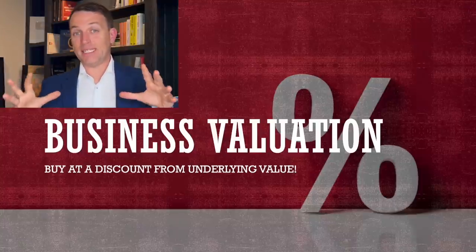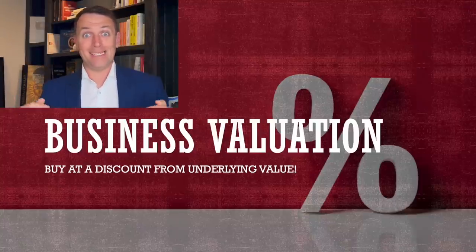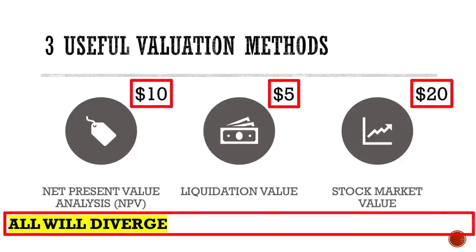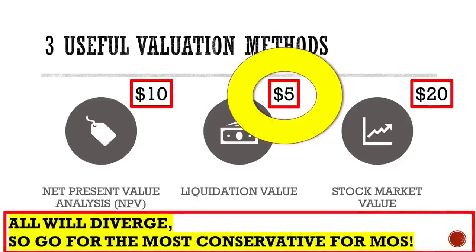Our goal in business valuation is to buy something below its intrinsic value. There are three useful valuation methods: net present value, liquidation value, and stock market value. The problem is that all of those will always diverge when you make an analysis. The key is that you take the most conservative one available. Some businesses won't even have a liquidation value, so you must pick between other methods.